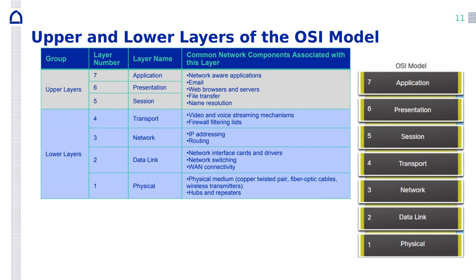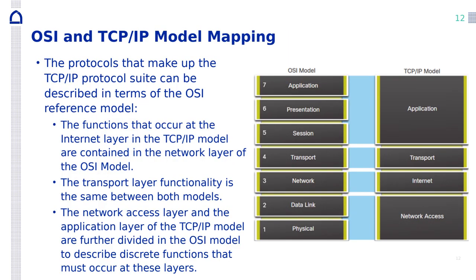Here we have the layers and examples of network components like email. IP addressing is in which layer? Layer three — network. Data link is layer two. Firewall filtering is in the transport layer. This is a good comparison between the OSI model and the TCP/IP model.